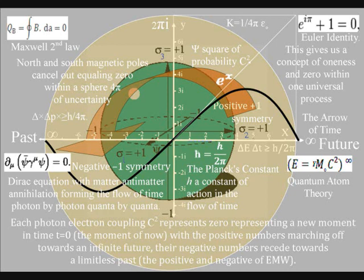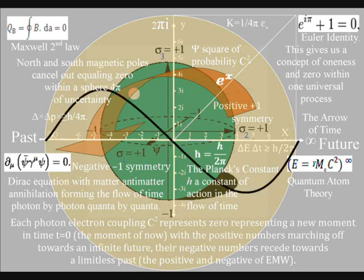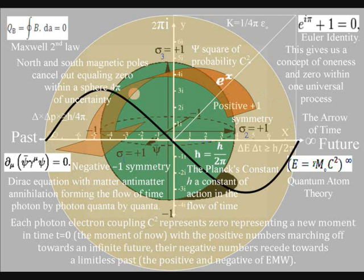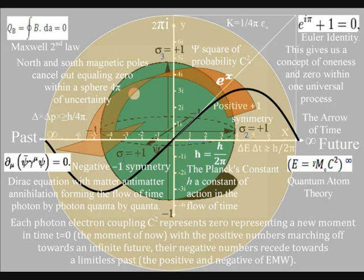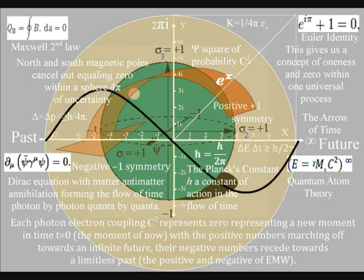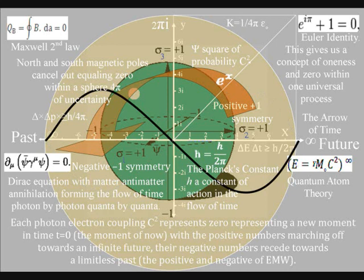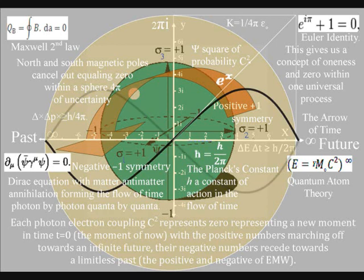This diagram shows a complex plane with the positive and negative numbers, and the imaginary numbers going off at right angles, with 0 in the centre. This still represents the geometry of a physical process. The 0 represents 0 time, or t equals 0, the moment of now, formed by light interacting with matter, with the positive numbers marching off forming a potential future with a square of probability, and the negative numbers receding towards a limitless past representing the positive and negative of electromagnetic waves.